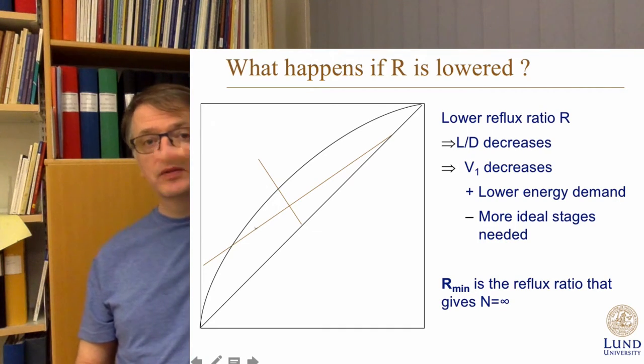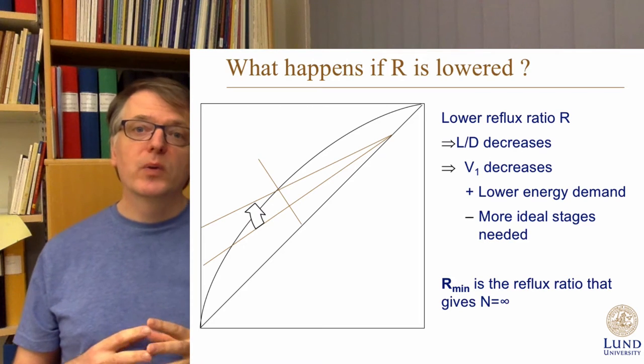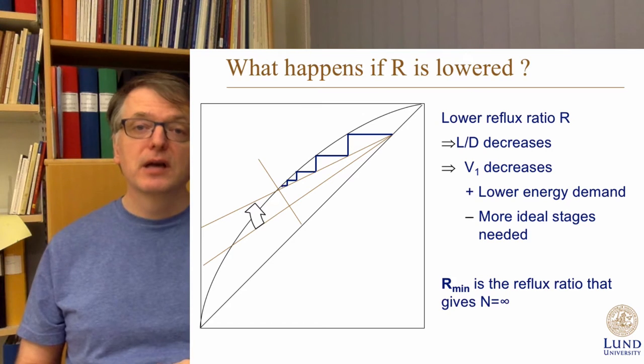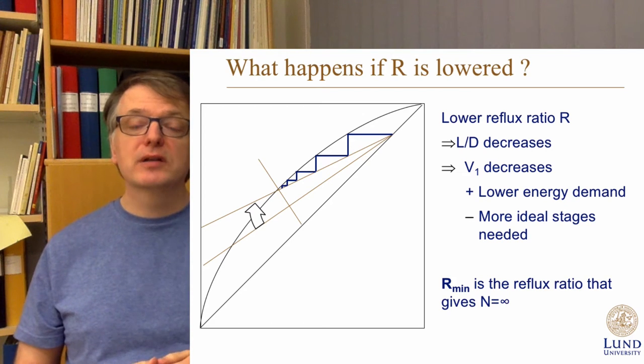We start with the minimum reflux ratio. If you draw a solution using McCabe-Thiele's graphical method, you have an operating line, and if you change the reflux ratio you change the slope of the upper operating line. If you decrease the reflux ratio, after a point you reach a limit where you get an infinite number of equilibrium stages — and that's the minimum reflux ratio.